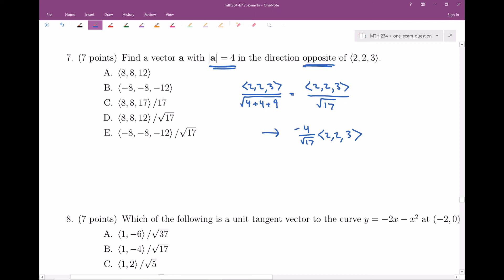Okay, so now I look back at my answers. None of these seem to exactly match what I have, but I see there's a lot of 8, 8, 12s. So I'm going to take this negative 4 and distribute it to see if that helps.